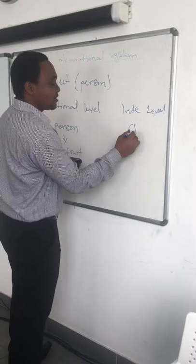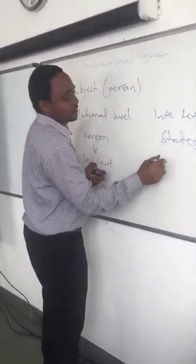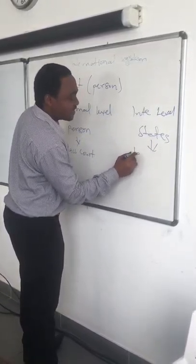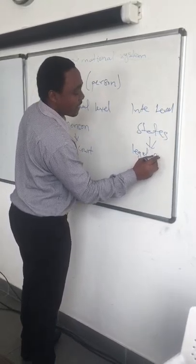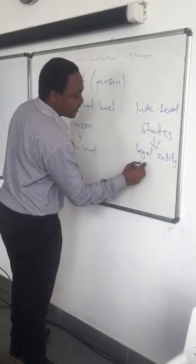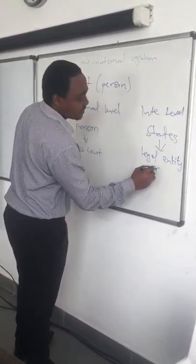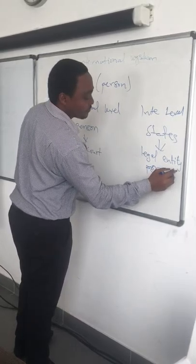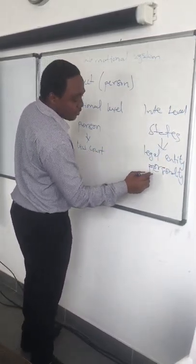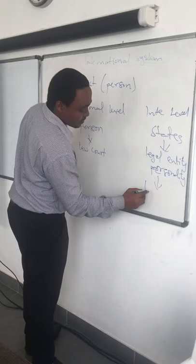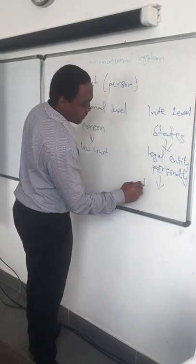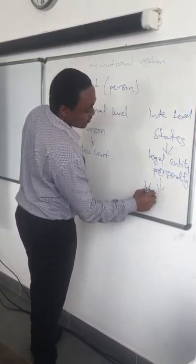At the national level it is the individual or person who is subject to the law court, but at the international level it is the states. States are considered as a legal entity or personality, which means states qualify to stand before the law court and therefore have standing under international law.